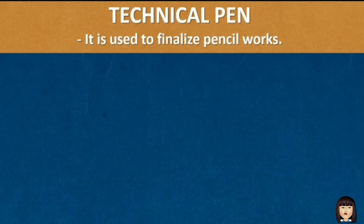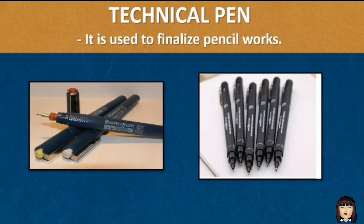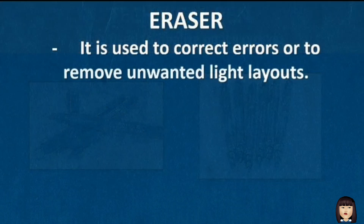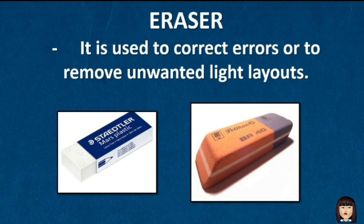The technical pen is used to finalize pencil works. The eraser is used to correct errors or to remove light layouts.